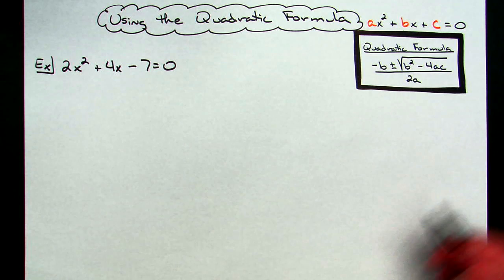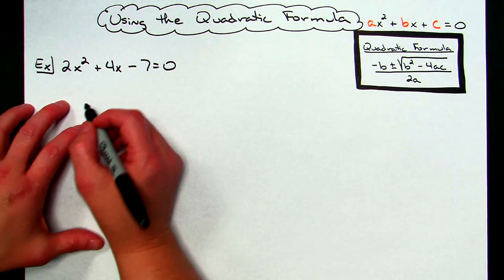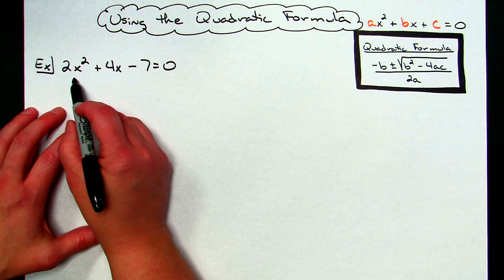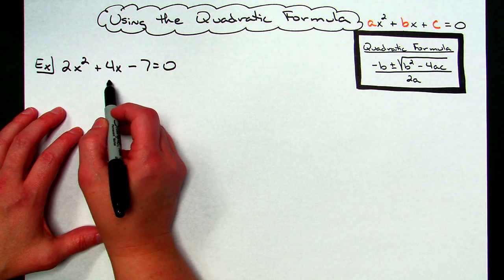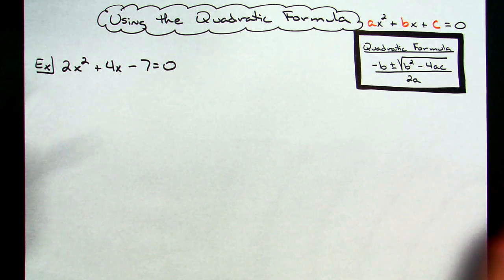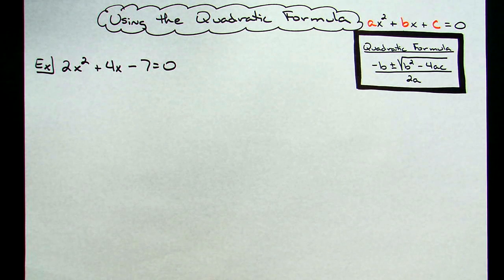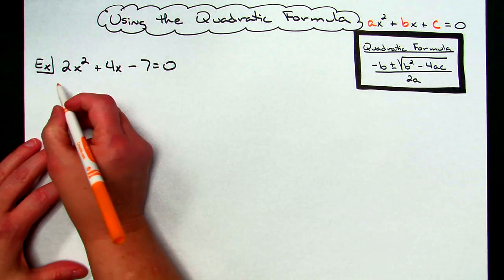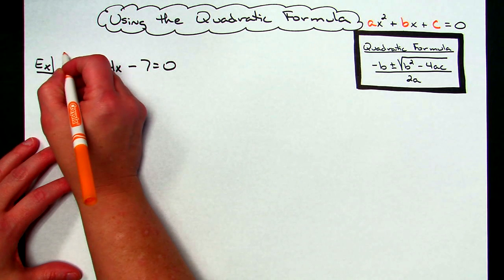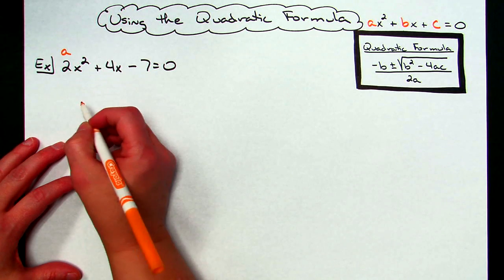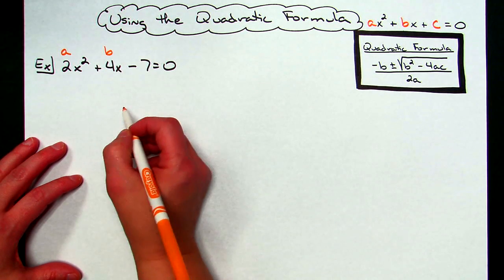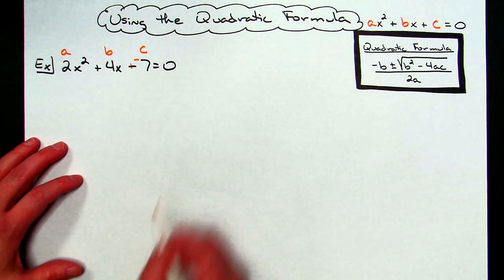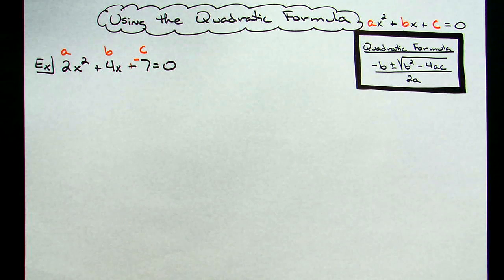For my first example, I've got 2x squared plus 4x minus 7 equals zero, and we are trying to solve this equation. First, I'm going to identify my variables: a is 2, b is 4, and c is negative 7 because it was a minus 7 at the end of the equation.